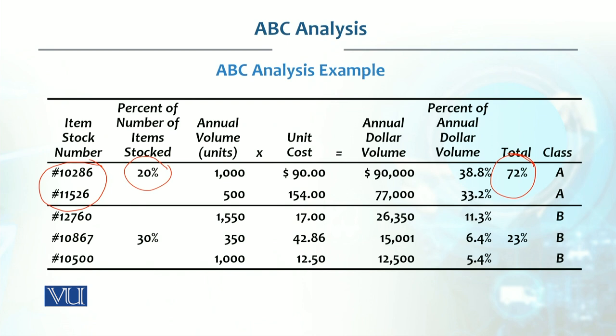But the total value of your inventory is 72 percent. This shows that these items are very important. It is critical that you monitor them tightly to avoid shortages, because their revenue impact is very high. These three products in the B category have 30 percent of units.